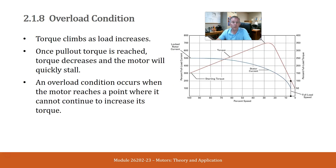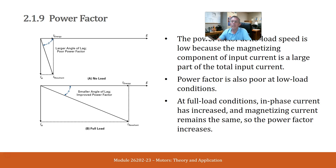Torque climbs as load increases. Once pull-out torque is reached, torque decreases and the motor will quickly stall. An overload condition occurs when the motor reaches a point where it cannot continue to increase its torque. The power factor at no load speed is low because the magnetizing component of input current is a large part of the total input current. Power factor is also poor at light load condition. At full load conditions, in-phase current has increased and magnetizing current remains the same, so the power factor increases.